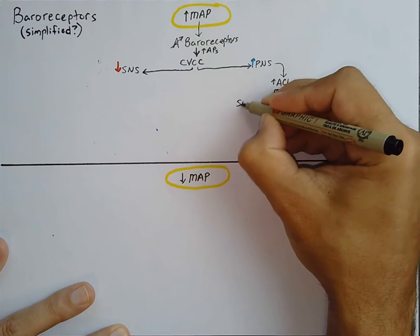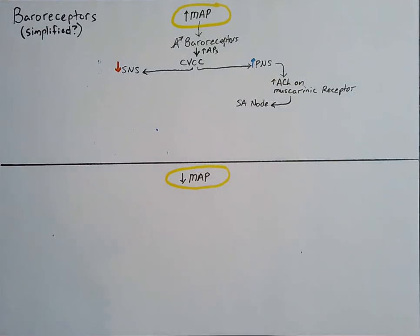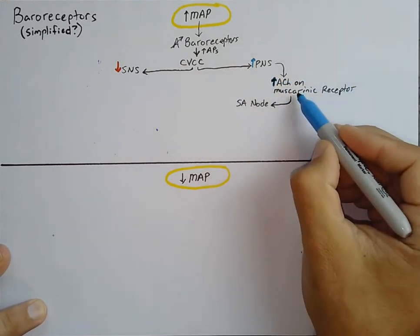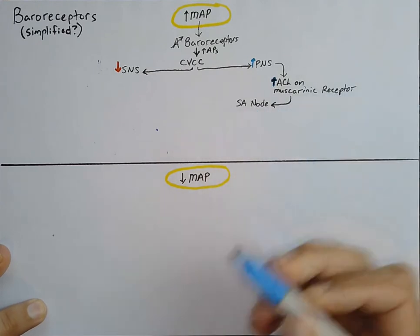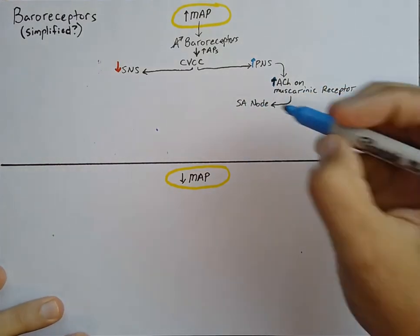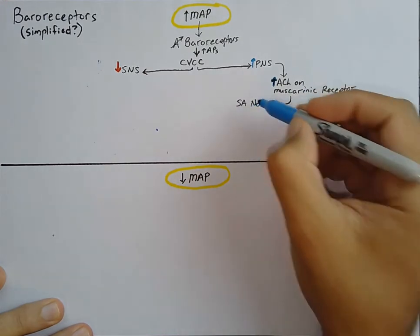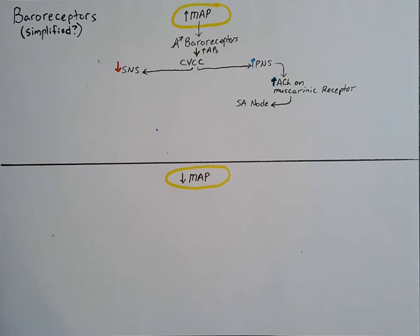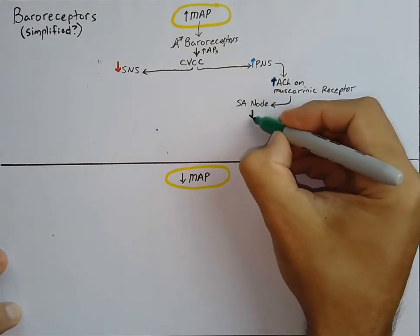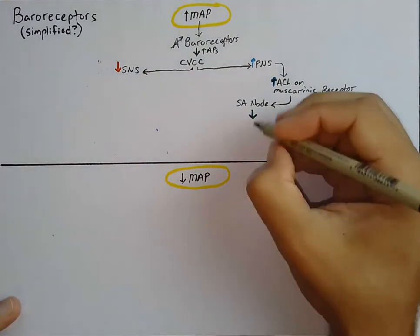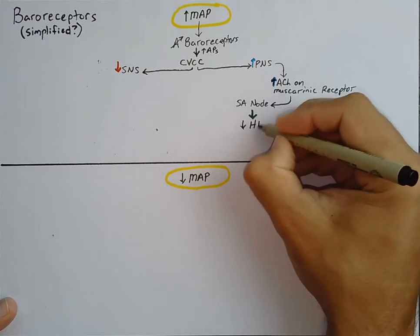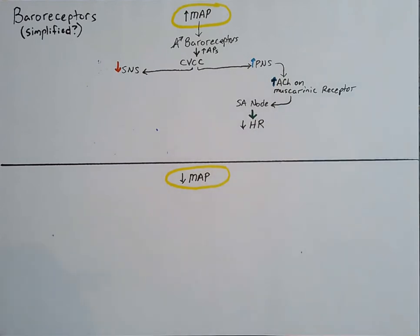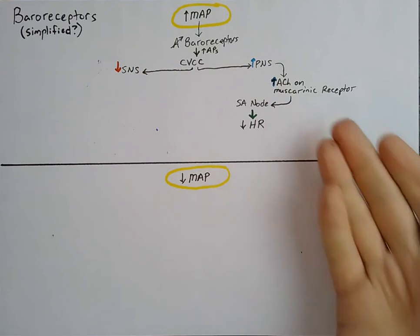We're going to be talking to the SA node here. As we activate the parasympathetic nervous system, it's going to release more acetylcholine onto the muscarinic receptors found on the SA node. As that SA node is inhibited by the muscarinic receptors, it's going to reduce the rate of depolarization. And as that reduces the rate of depolarization, that is going to act on the heart rate — it's going to decrease that heart rate. As the acetylcholine gets dumped on the muscarinic receptors, the SA node reduces its rate of depolarization and that decreases heart rate.